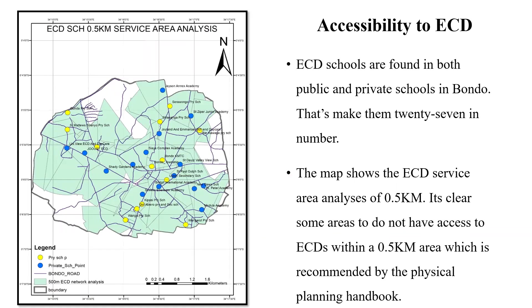Regarding accessibility to ECDs: according to the physical planning handbook, ECDs are considered accessible to pupils when they are within 0.5 kilometers. So I did a service area analysis of 0.5 kilometers around the schools that have ECDs — and there are quite a number in Bondo. On the map, white areas are not covered, meaning there are no schools within 0.5 km. It is worth noting that those uncovered areas also had very few settlements.